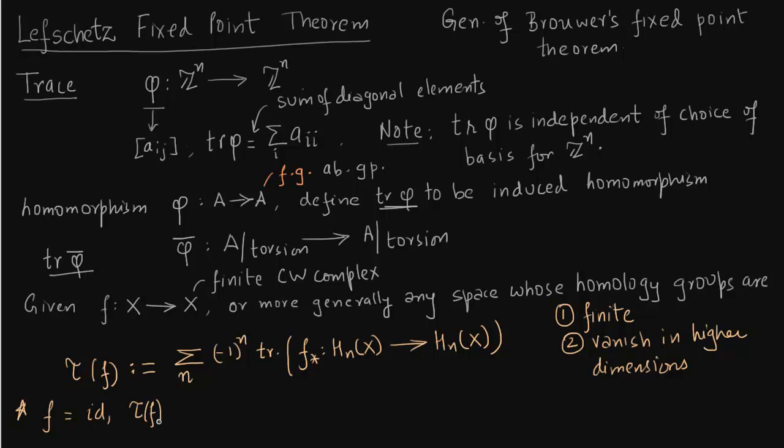A particular case is what if f is an identity? Then you will notice that the Lefschetz number is precisely nothing but the Euler characteristic. And we need to give the reason why. Let us write down what the Euler characteristic is.